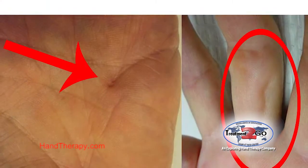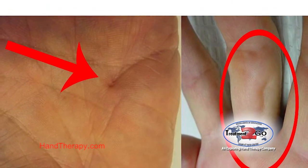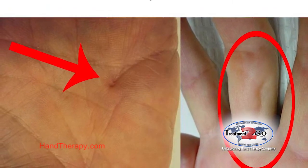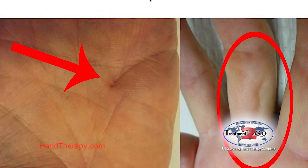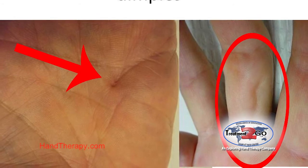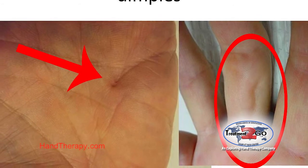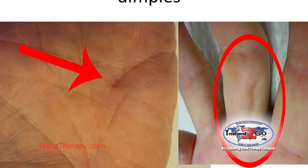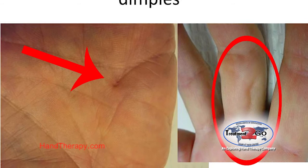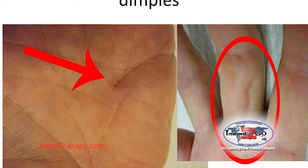What about skin pits? These are little indentions that occur in the skin, and you can see that as well. The little dimples and skin pits show up clearly on the patient in the early stages.